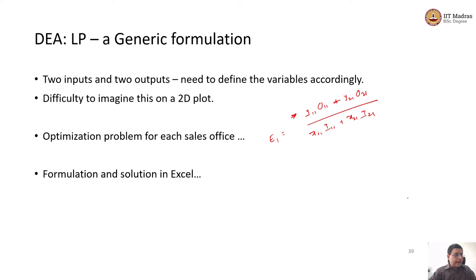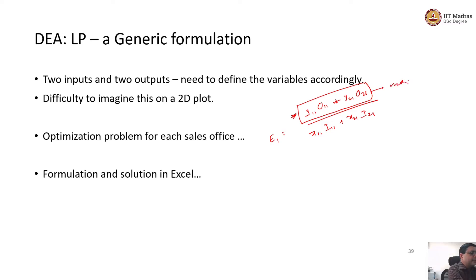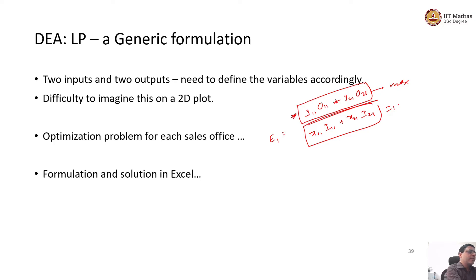The linear programming problem is to maximize the numerator. We normalize the denominator to equal one so that we do not end up having a ratio in the objective function — normalizing the denominator to one is going to be the first constraint. Maximizing the normalized numerator is going to be the objective function. What are the other constraints?